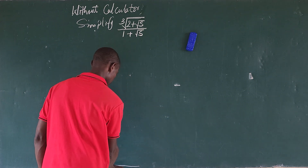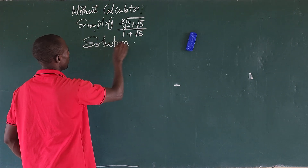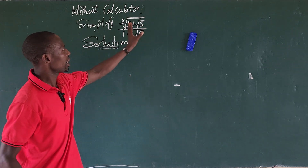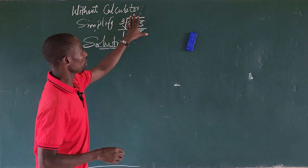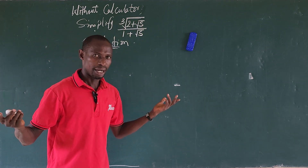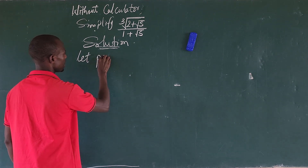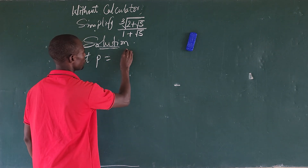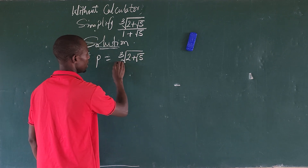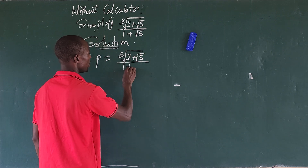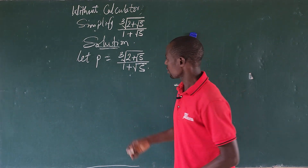Now let's go into the solution. We perform a simple substitution — we equate the value of this expression to a variable. Let p be equal to the cube root of (2 + √5) all over (1 + √5).